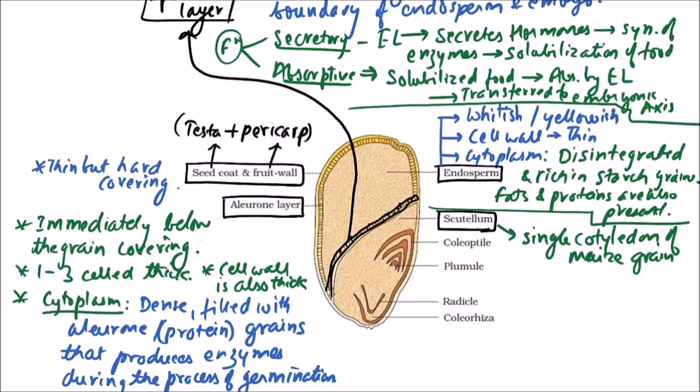Then there is coleoptile. This coleoptile is conical protective sheath. Then plumule, this is the future shoot. Then radicle, radicle is the future root.